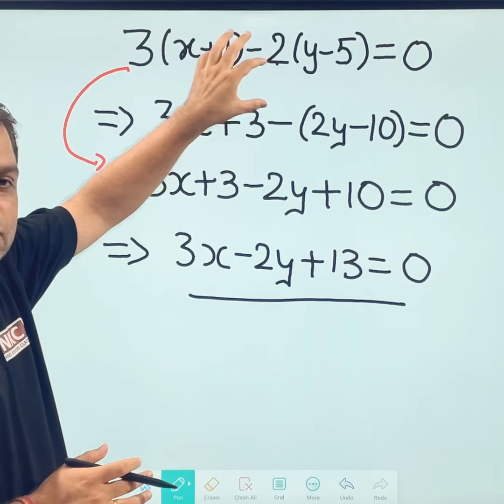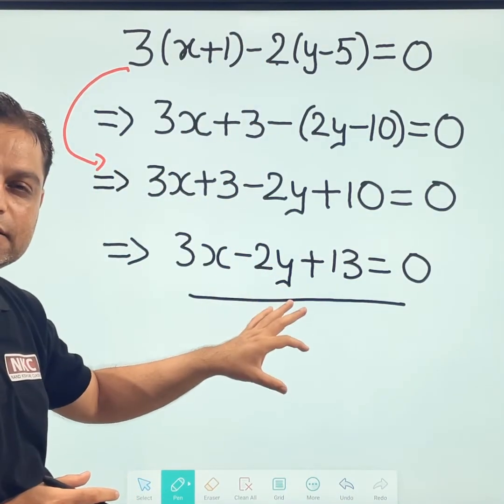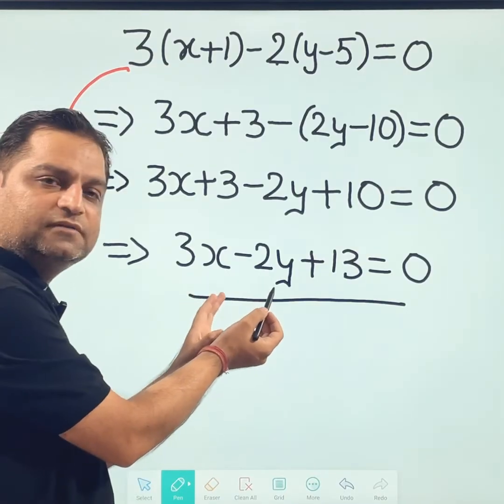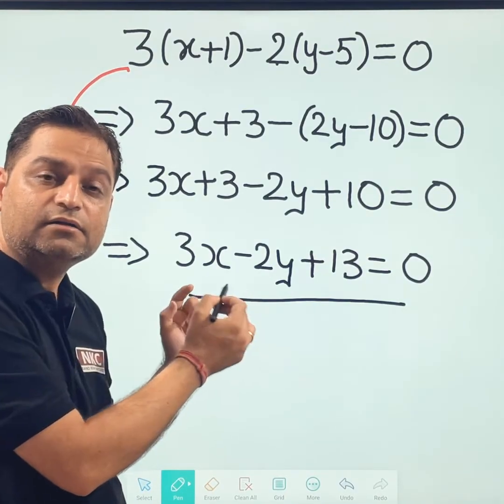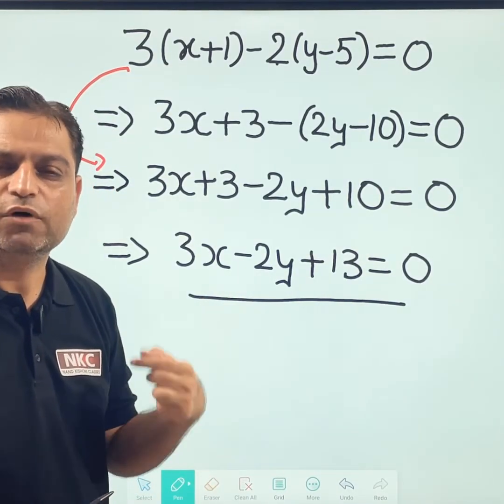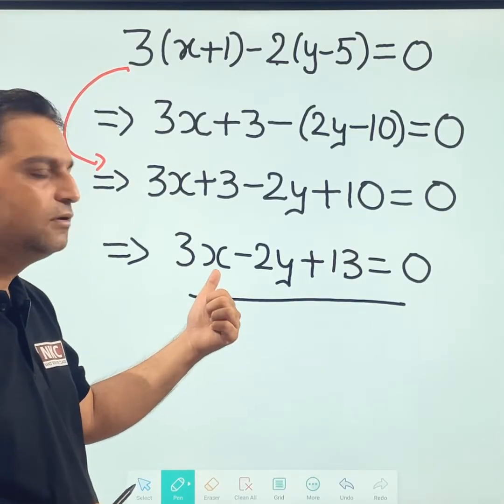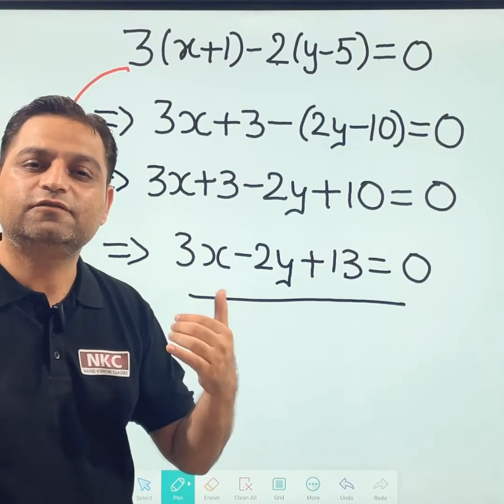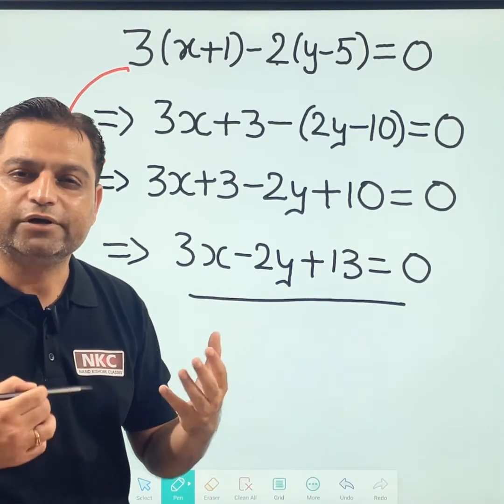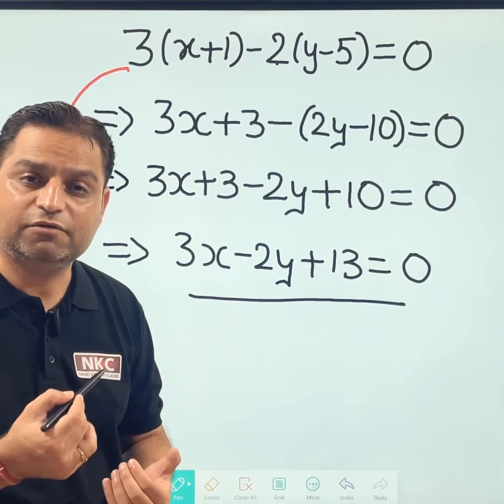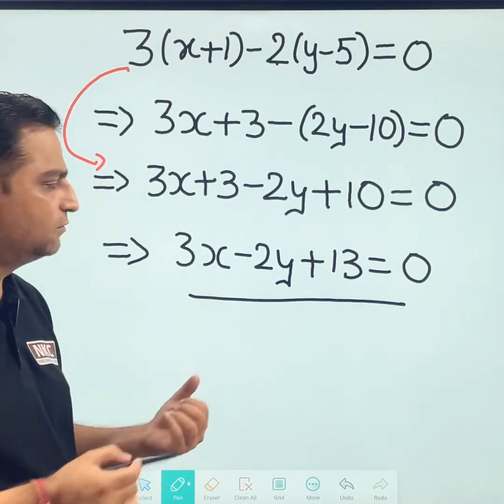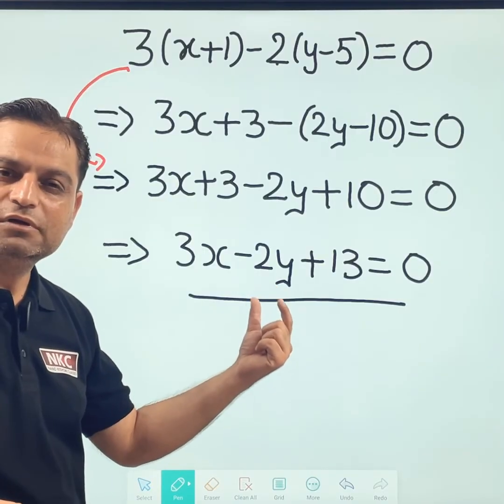After solving all these things, we are getting linear equation in 2 variables. 2 variables are there, x and y and this is known as linear equation. Why linear equation? Because degree is 1. If you plot its graph, you will get a straight line. We are not going to plot the graph because purpose of our video was to show how to simplify this parenthesis.